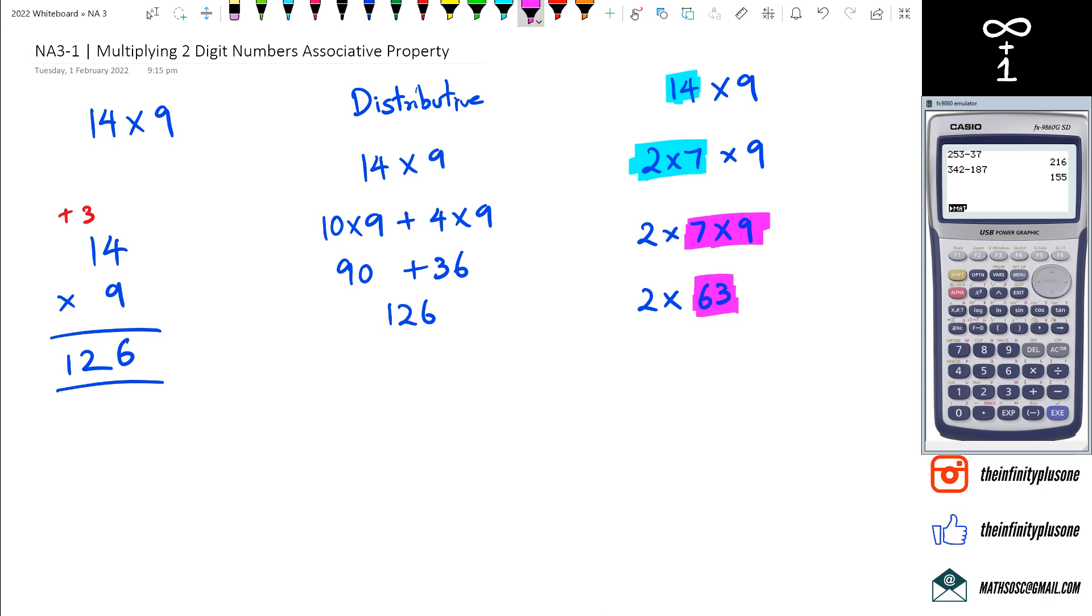And of course, 63 times 2, guess what, you got to use that distributive property whether you like it or not. Even though you try to do associative, that's just the way it is. So what do you got? 63 times 2 is going to be 126.